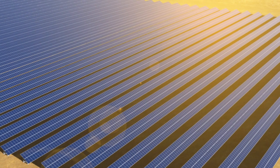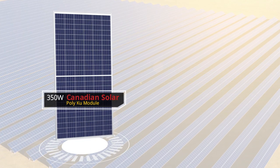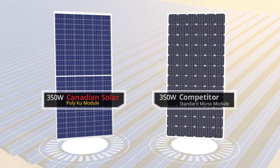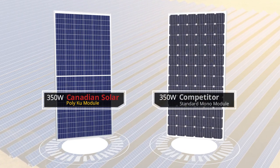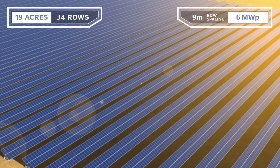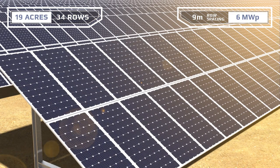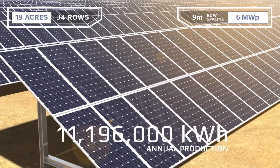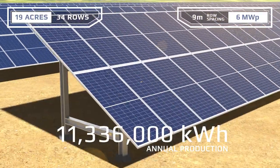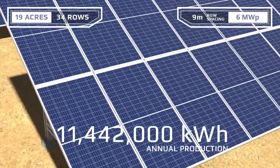Let's look at a real-life design example comparing our 350 watt poly KOO modules to our competitors' 350 watt standard mono modules. We've got 19 acres of land which fits 34 rows of modules with 9 meter spacing between the rows for 6 megawatts total. Here's our competitors' standard mono system.